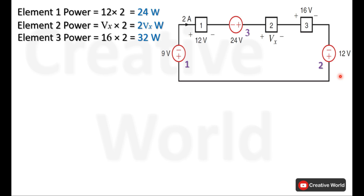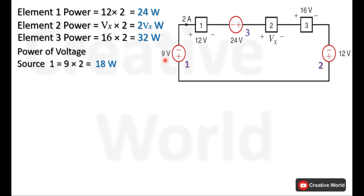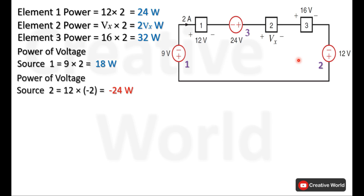We will start calculating power from voltage source 1. The voltage across it is 9 volts and the current through it is 2 amperes. This current passes through all the elements because of the series connection and is entering from the positive terminal of this 9-volt source, so it will be taken with positive sign. The power of source 1 will be 9 volts multiplied by 2 amperes, which is 18 watts, and because of the positive sign this power is being absorbed by voltage source 1.